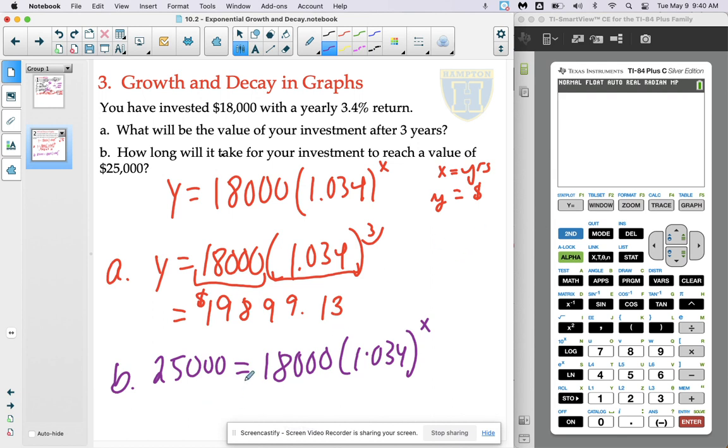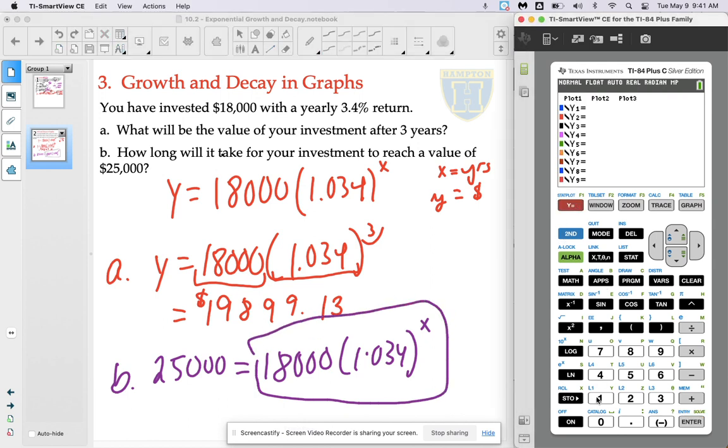So we're going to actually begin by graphing this right-hand side. So over here in our graphing calculator, let's say 18,000 times 1.034 to the power of X.